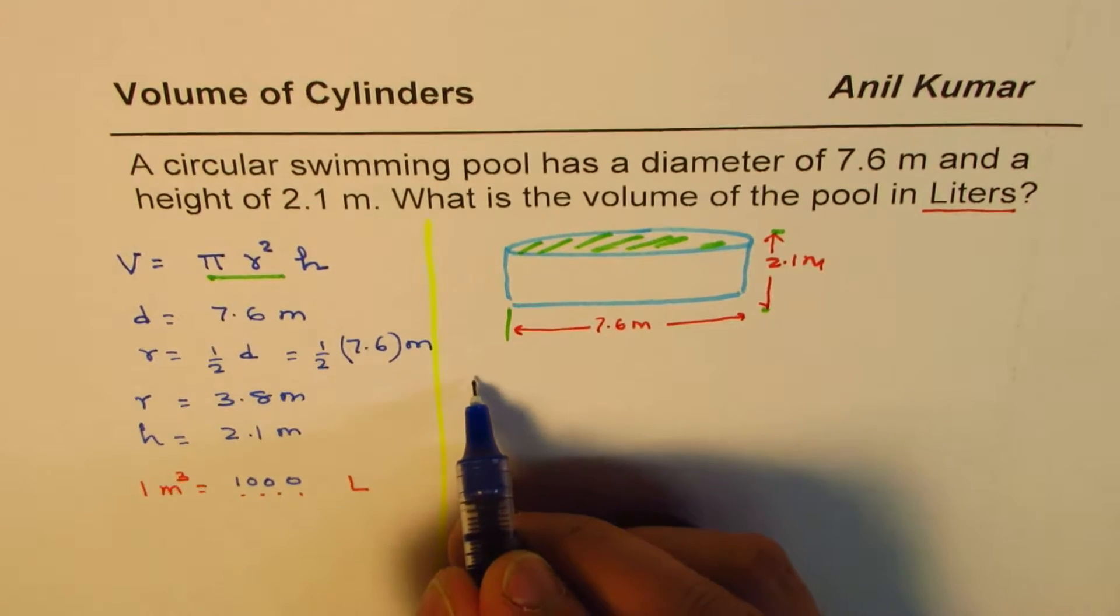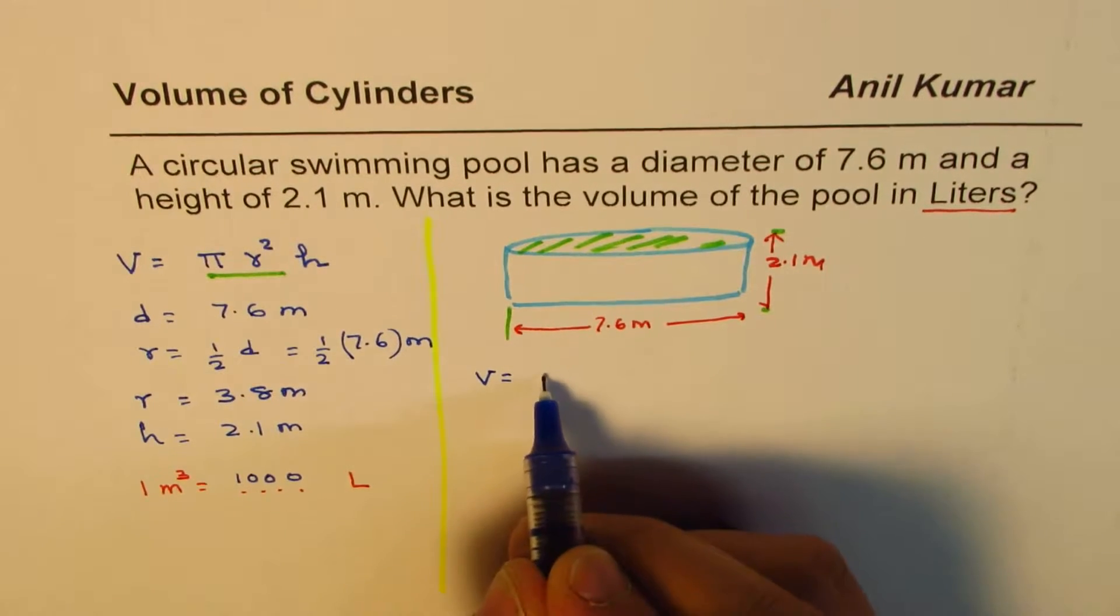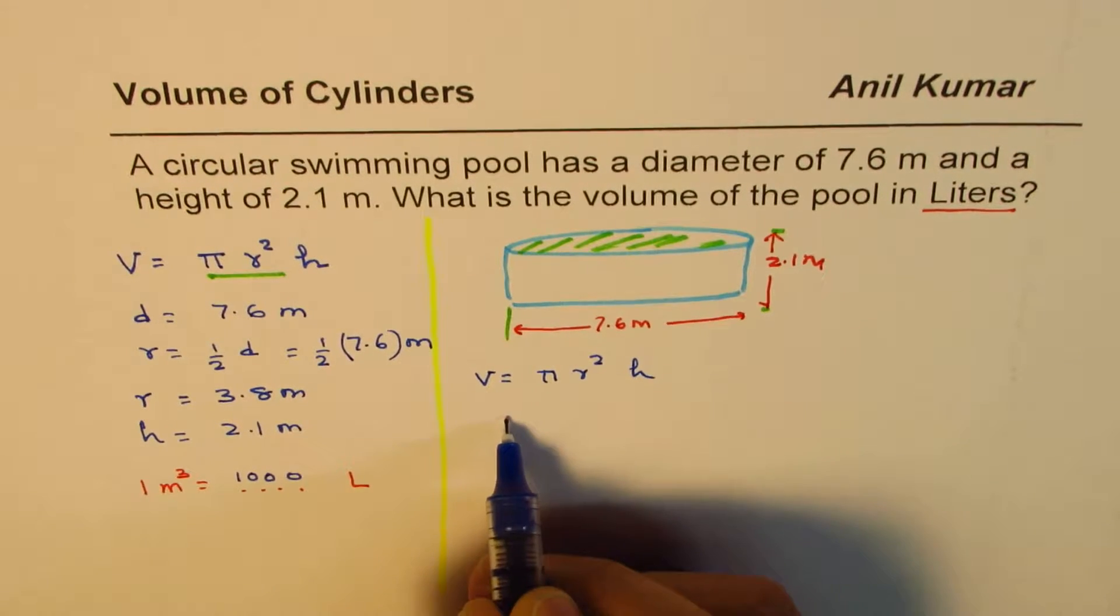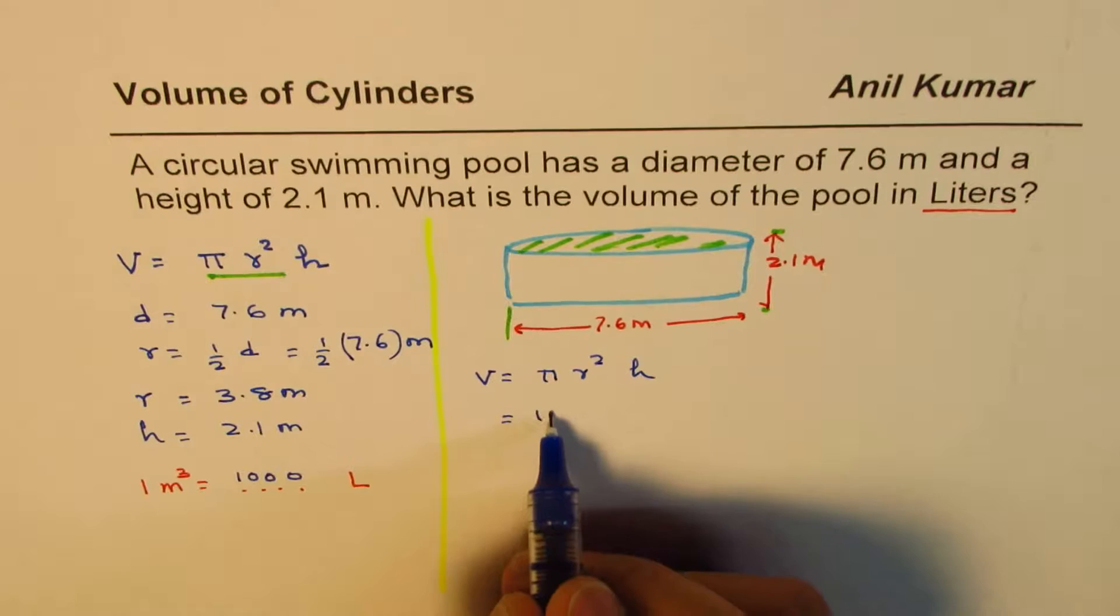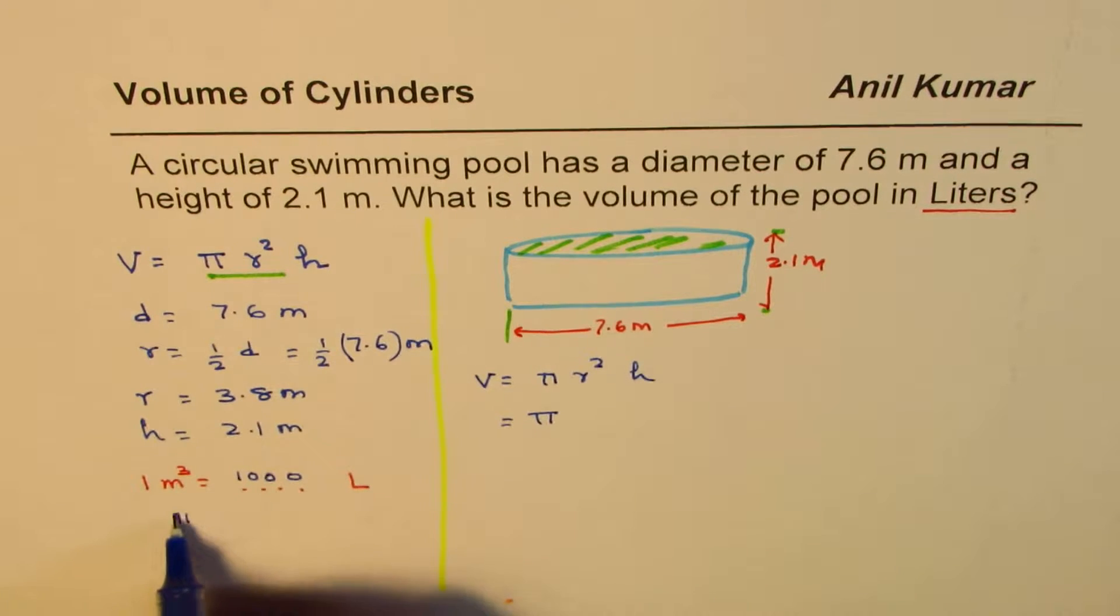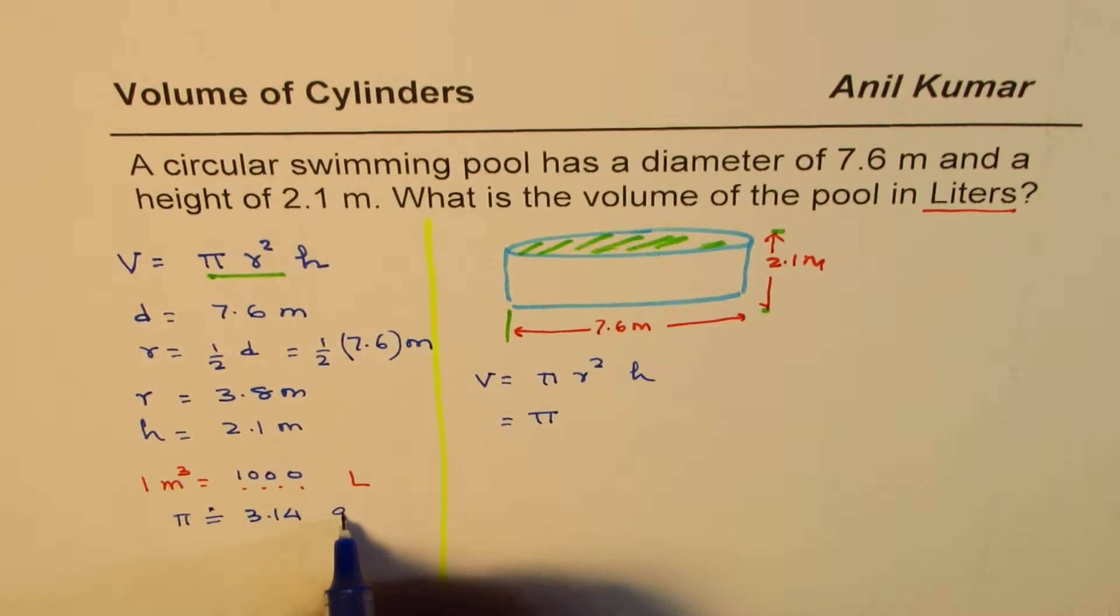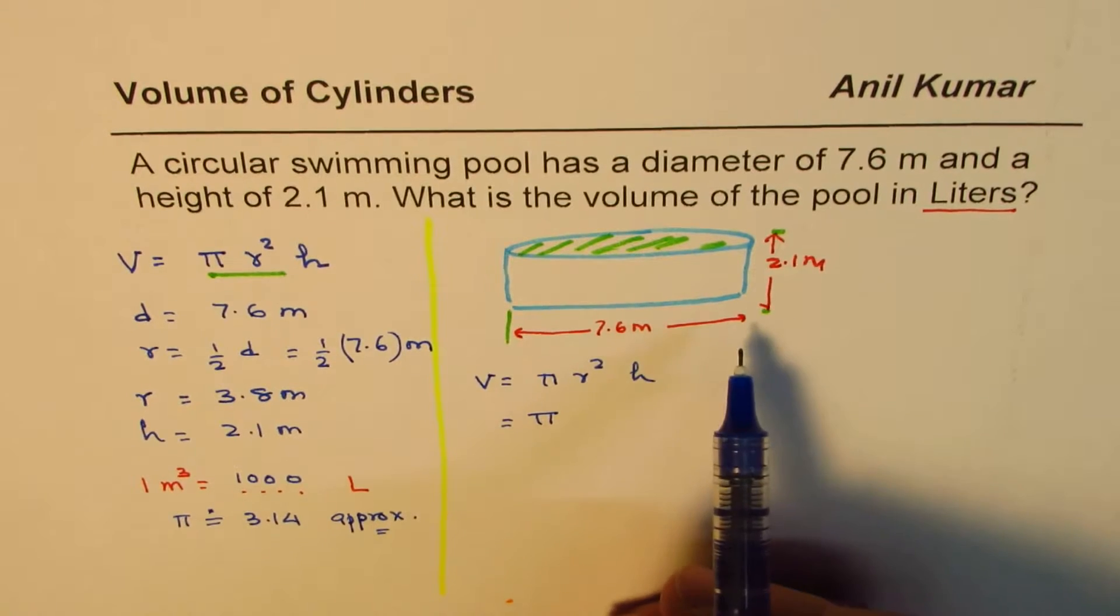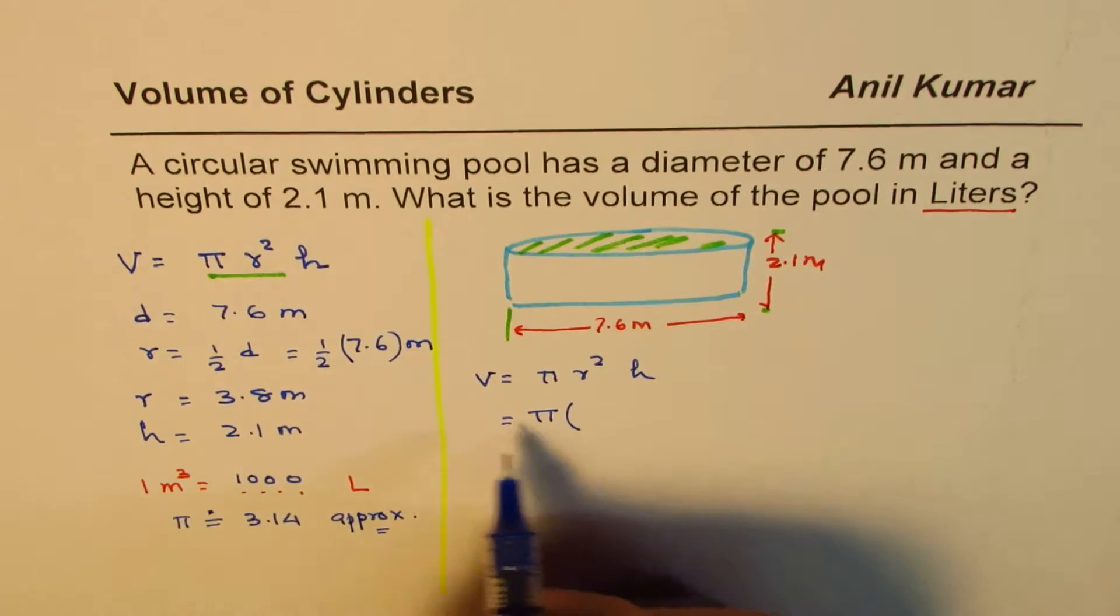Now what we are going to do is we are going to do our calculations. So volume is π r² h. Let's use the calculator. We'll write π as such. If you write π in terms of 3.14, that is approximate and it gives you a lot of error when you're working with big numbers, especially in meter cube.